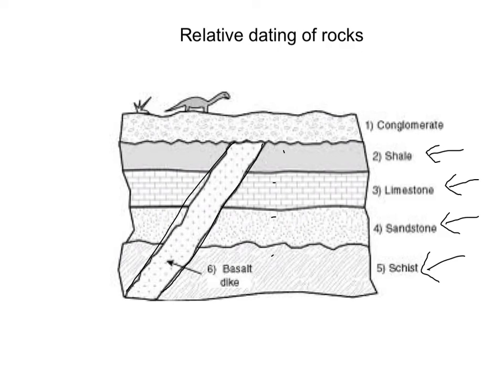The last layer to be laid down was conglomerate, which is laid down on top of the basalt dike, and this would therefore be the youngest layer.